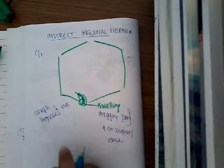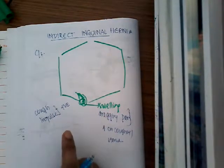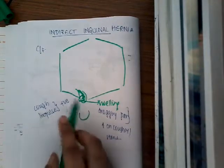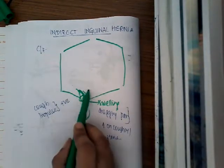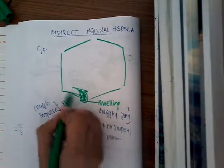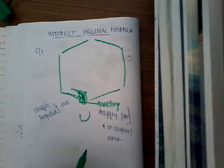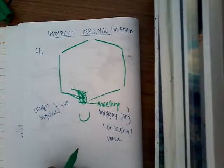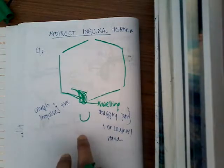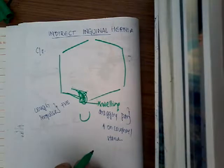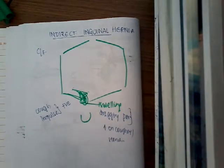If the hernia is complete, then it descends up to the scrotum. If it is incomplete, it can be in the inguinal canal itself — which is called bubonosil — or it can cross the superficial inguinal ring, in which case it is called funicular.